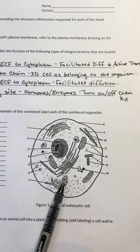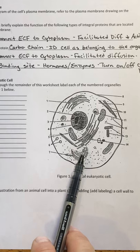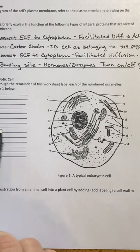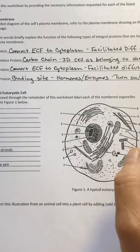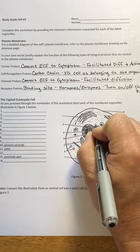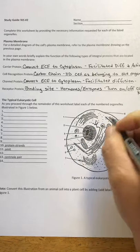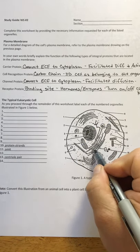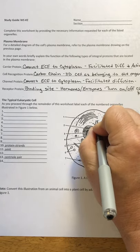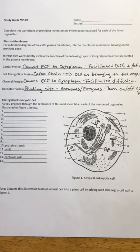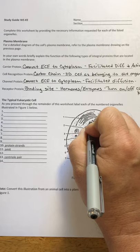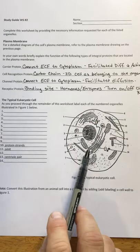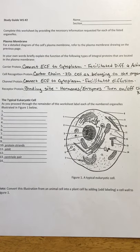Down here we have a graphic of a eukaryotic cell with some major organelles to identify and label on the left-hand side. I want to make one adjustment to this diagram. This structure with the rough-looking surface is the rough endoplasmic reticulum. The newer graphics show almost like a continuation of the rough endoplasmic reticulum with the smooth endoplasmic reticulum, so I want to connect those two structures to be more current with the textbooks.